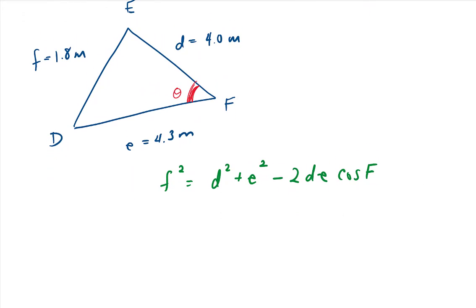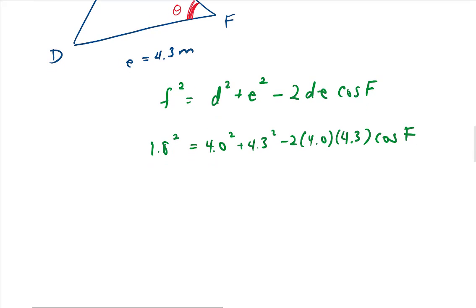So let's put in what we know. We know that f is 1.8. We know that d is 4.0. And e is 4.3. Minus 2 times 4.0 times 4.3, cosine of angle F, which is the angle that we're looking for. So we have all the other variables filled, we just need to solve for the angle. So first of all, let's simplify this a bit.